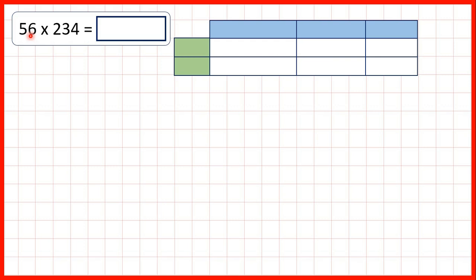Now we're multiplying a two-digit number by a three-digit number using the grid method. First we need to partition our numbers. 56 is 50 and 6, and 234 is 200, 30, and 4.